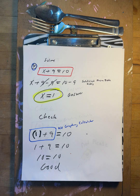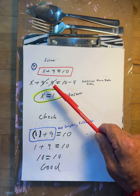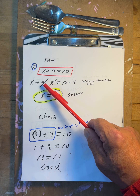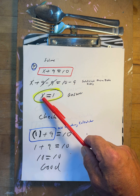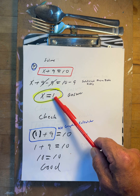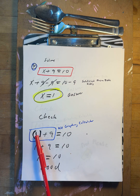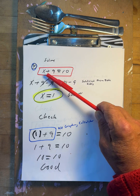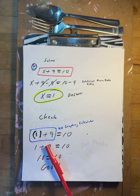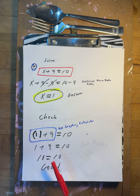x plus nine equals ten. We do the opposite: minus nine, minus nine. Those cancel, so x equals one. Does that work? Put one in there: one plus nine is ten. Yes. And you can use the graphing calculator if you want.